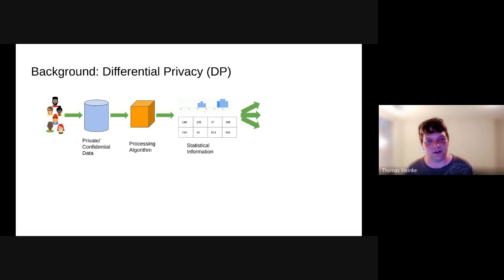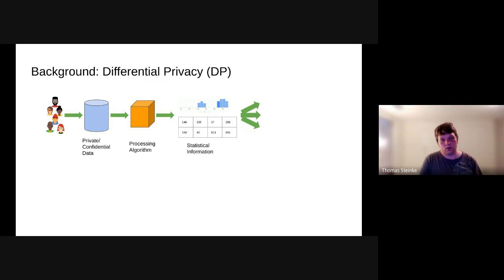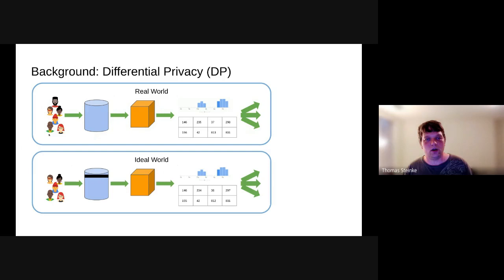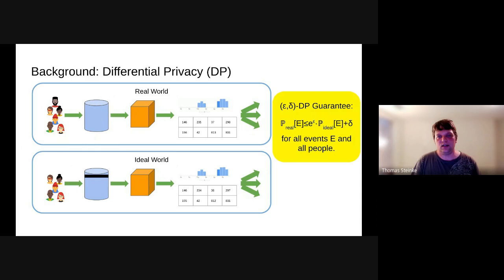I hope many of you are familiar with differential privacy, but I'll give a brief introduction. The setting is as follows: we've collected the private data of several people, stuck that through some processing algorithm, and that's produced statistical information which we're going to release to the whole world. The concern is that the statistical information we made publicly available is going to leak some sensitive details about the people whose data we've collected, and we want to prevent that. The way we formalize preventing that is differential privacy. We consider the real world and an ideal world where your data has been completely removed from the input, and the guarantee of differential privacy is simply that these output distributions are similar.